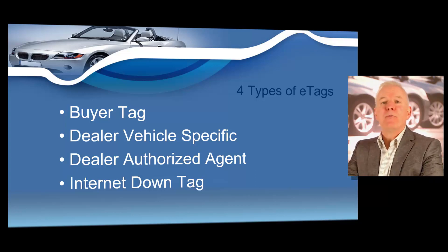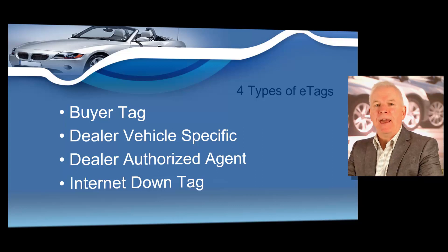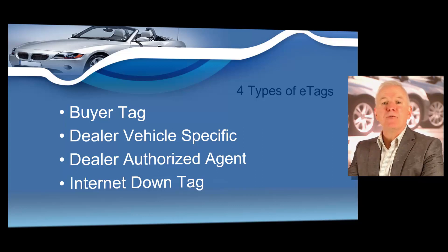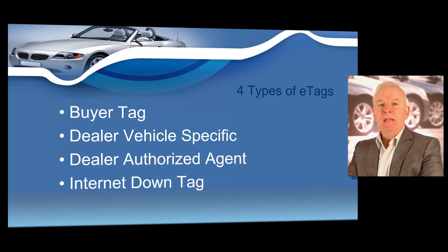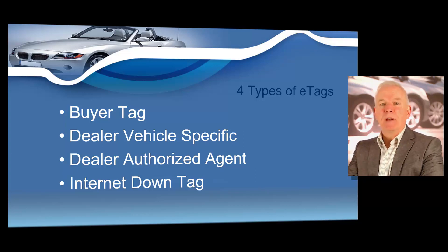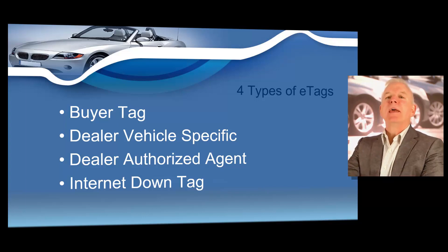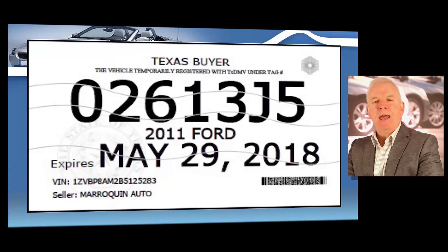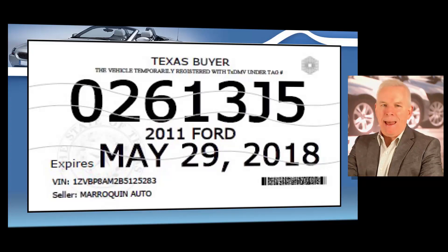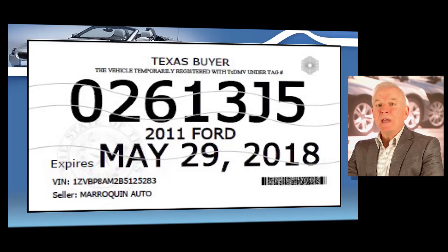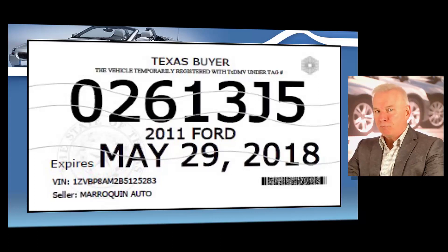There are basically four types of e-tags, and each tag has a specific use: your buyer tag, dealer vehicle specific tag, dealer authorized agent tag, and your internet down tag. First, let's take a look at the Texas buyer tag. The buyer's tag is issued with the retail sale of a vehicle that's in the dealer's inventory.